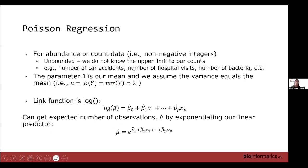Poisson regression is for abundance or count data — an unbounded number of successes. In binomial we had an upper bound; in Poisson, theoretically there is no upper bound. You can think of this as the number of car accidents, hospital visits, or bacteria, where there's no theoretical upper bound.